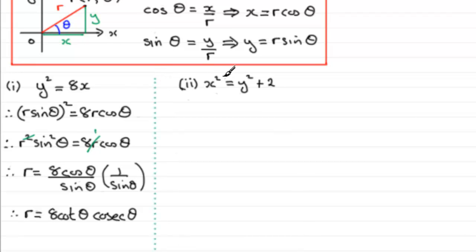In example two, we've got x squared equals y squared plus 2. Again, we substitute for x and y — you might like to pause the video and give this a go, trying to simplify your answer as much as possible. Let's see how you got on.